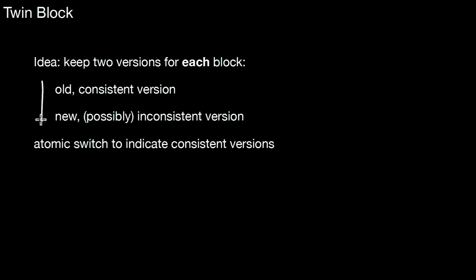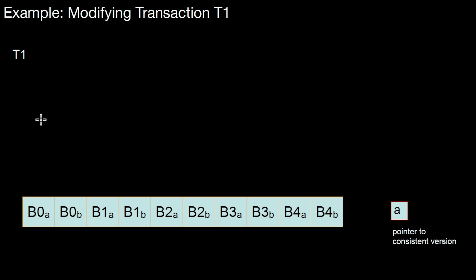Let's look at an example. Let's assume we have a modifying transaction T1. T1 wants to modify the file, and the file consists of blocks from 0 to 4. However, each block exists in two different versions - there is an A version and a B version for each and every block. In addition to that, we need a pointer to the consistent version. The pointer may be set to A or B. Currently it's set to A, indicating that A is the consistent version.